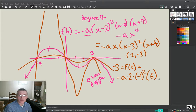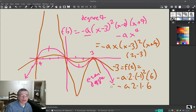So this is minus a, x is 2, so we put in 2, x minus three is minus one, that's one and that's squared, x plus four is six. That's the end of our equation. All right, so we've got minus a times 2 times 1 times 6, and that equals minus three.